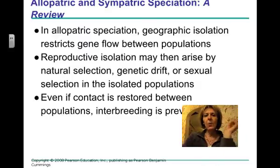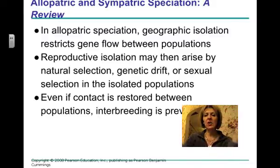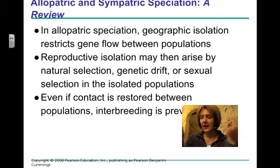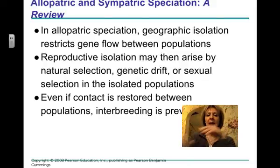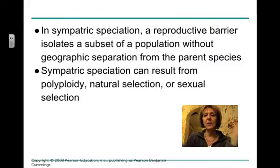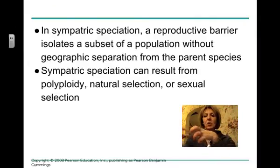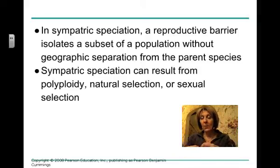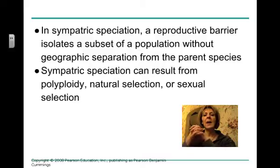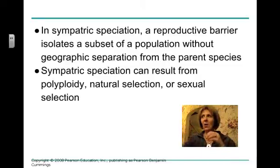In review: in allopatric speciation, you have geographical isolation and reproductive isolation that can then arise by natural selection in the two separated areas, genetic drift, or sexual selection. Even if contact is restored between the populations, interbreeding is prohibited. In sympatric speciation, a reproductive barrier isolates two different populations without them being physically divided, and those two populations evolve into two different species by either polyploidy, natural selection acting differently on the two groups, or sexual selection like we saw with the cichlids.